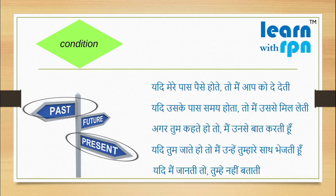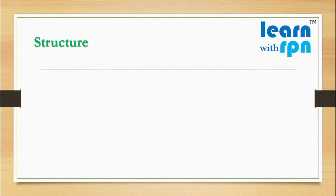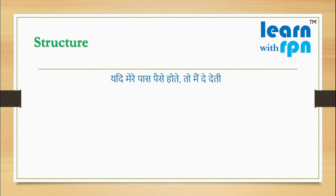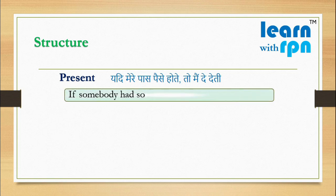Where the sentences are related to present or past depends on the speaker and the situation. Let's understand some situations. दोस्तों, आज जब मेरी सहेली ने मुझसे कुछ पैसे मांगे, तो मैंने बोला, यदि मेरे पास पैसे होते, तो मैं दे देती. Here, the feeling is related to present — अगर आज किसी के पास कुछ होता, तो वो कोई action कर लेता. I will use a structure for such present condition: If somebody had something, somebody would action.